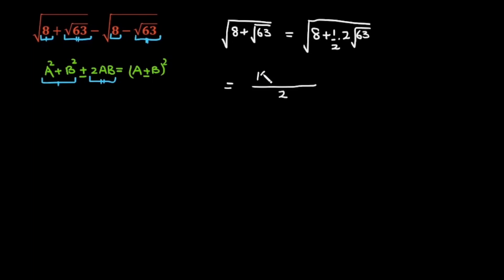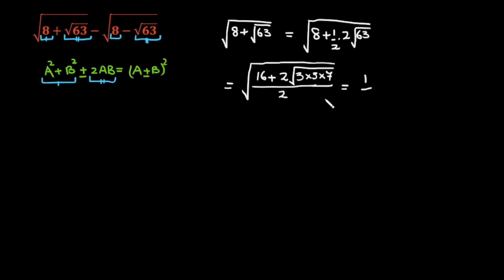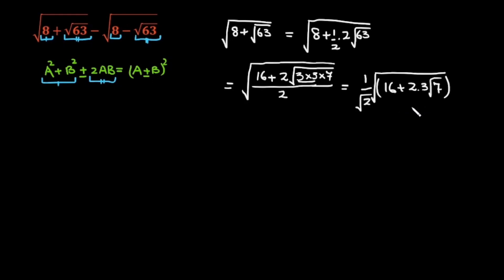Taking 2 as LCM: 2 times 8 is 16, plus 2 times √63. Now √63 — if I take out the square root, this becomes 1 over √2, inside the bracket: 16 plus 2 times 3 times √7 under the square root — whole under root. So this is my 2ab.